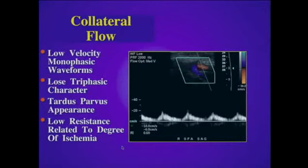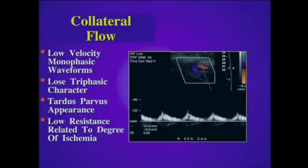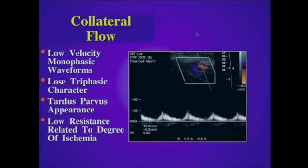Here's an example of a collateral obtained in a patient with underlying occlusion. Notice the classic tardus parvus appearance with a slow rise to peak systole and damped velocity. The hallmark of collateral flow is low velocity monophasic waveforms with a tardus parvus appearance. These arterial waveforms lose their triphasic character and are related to decreased resistance from distal ischemia.